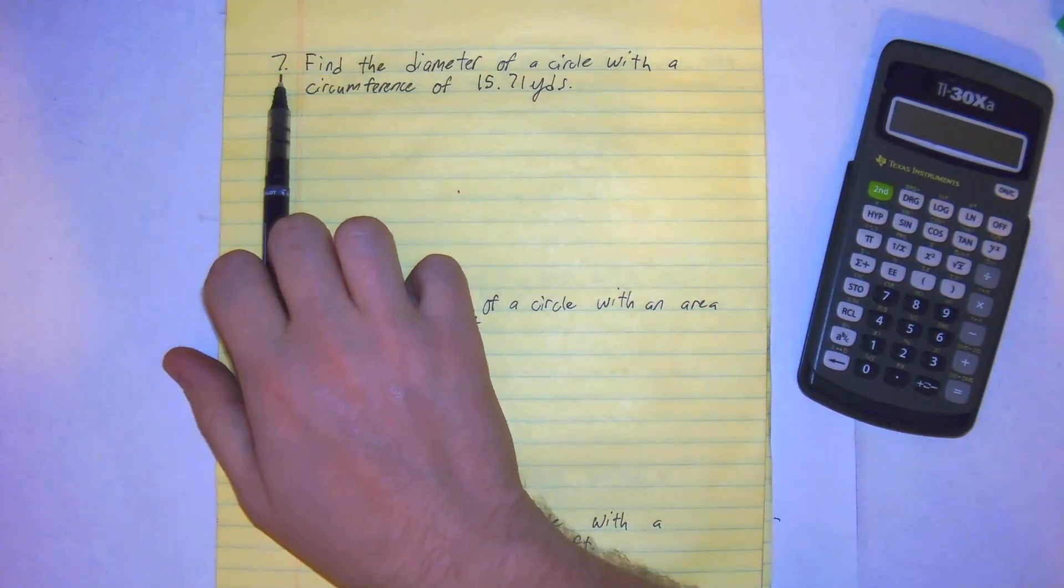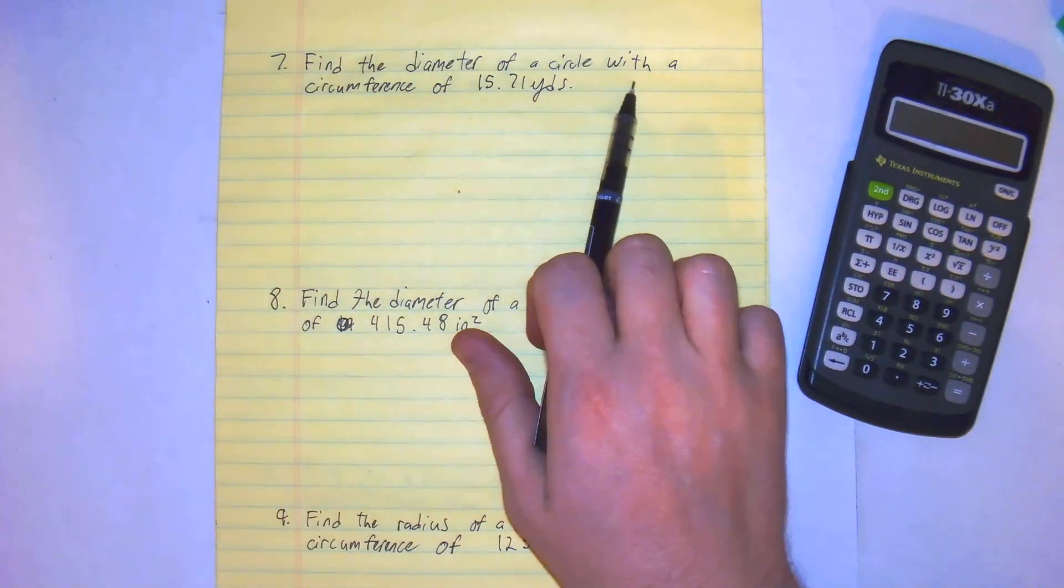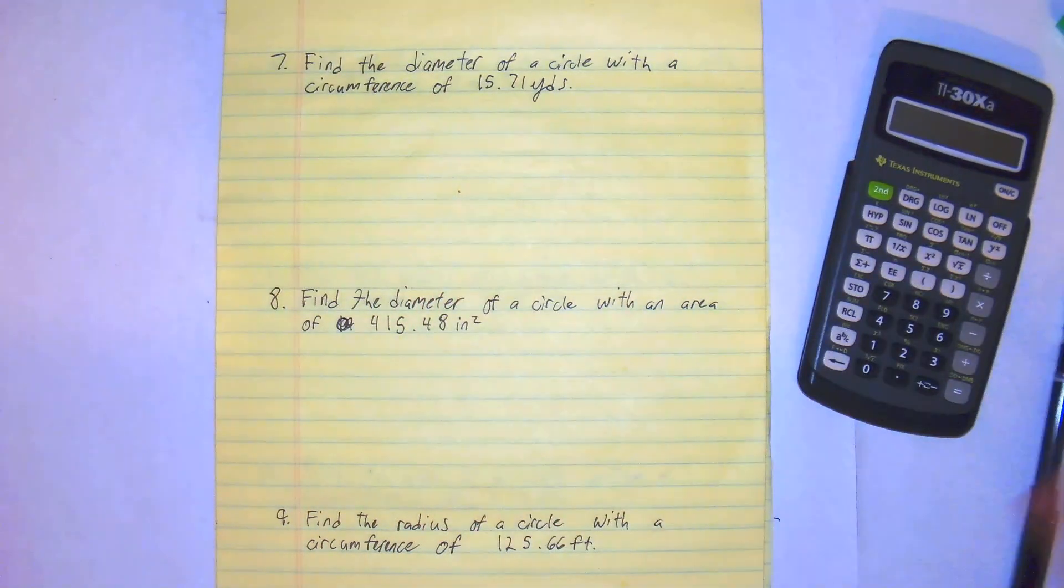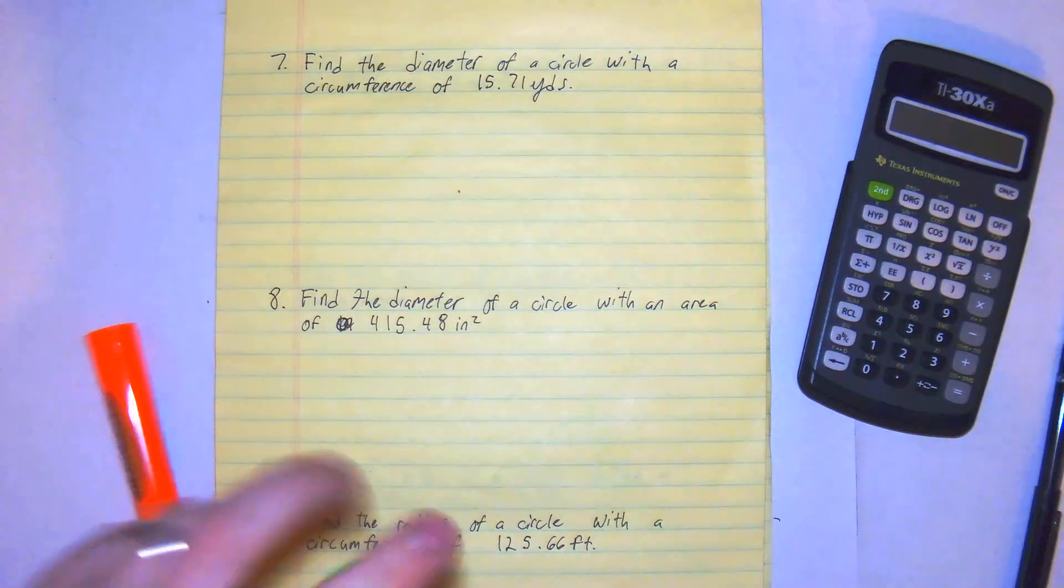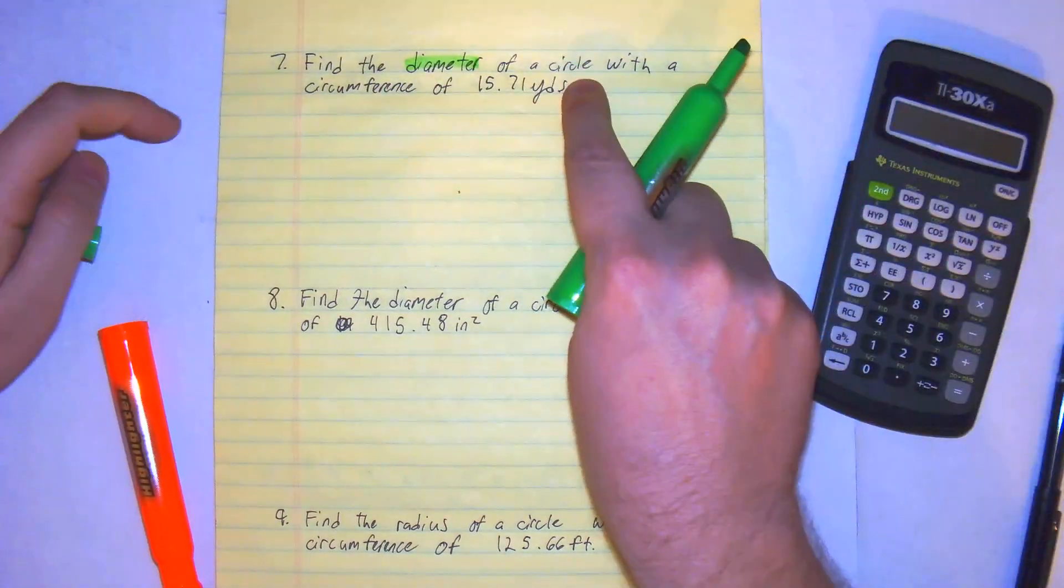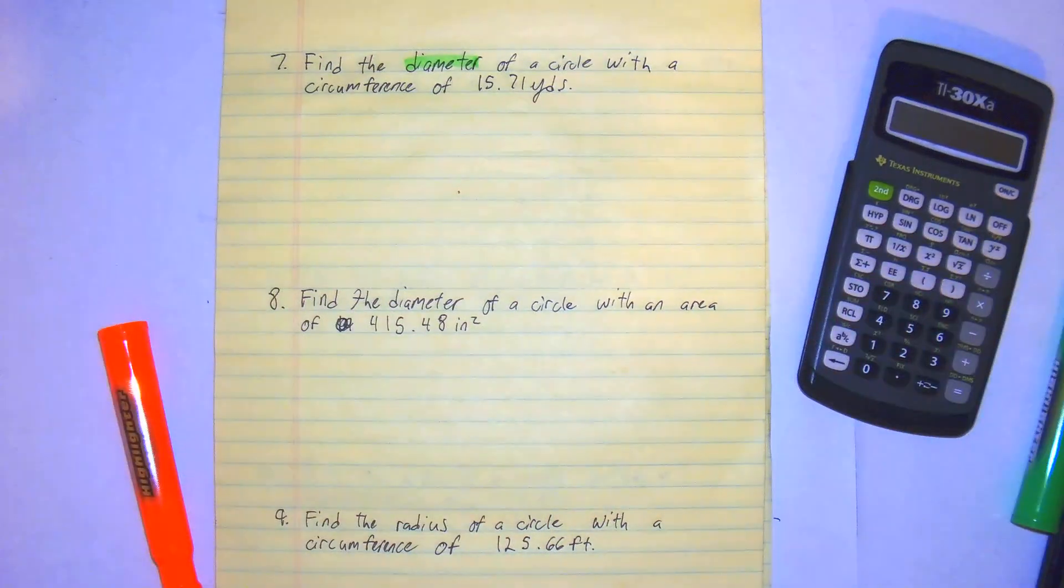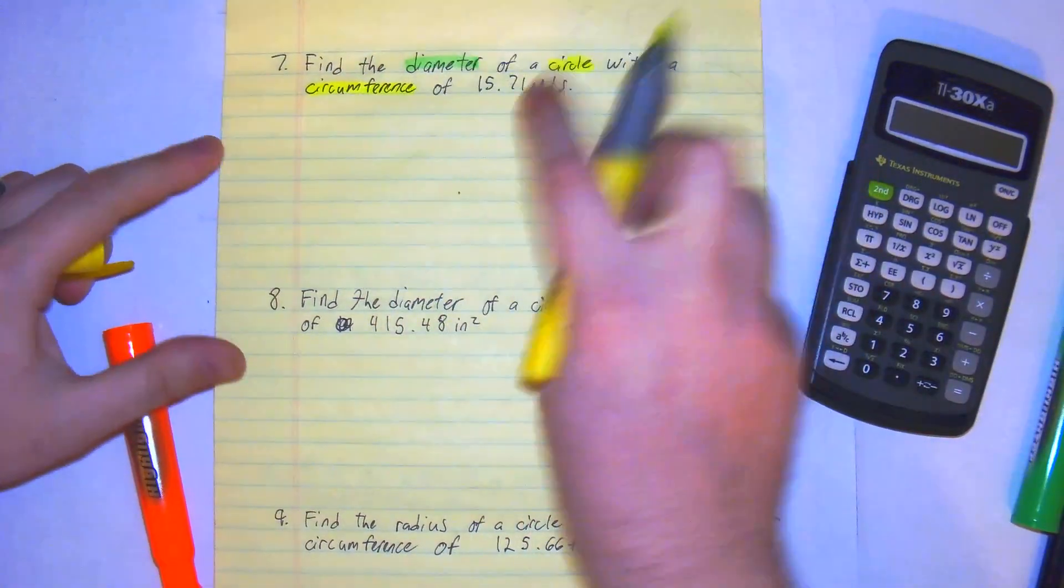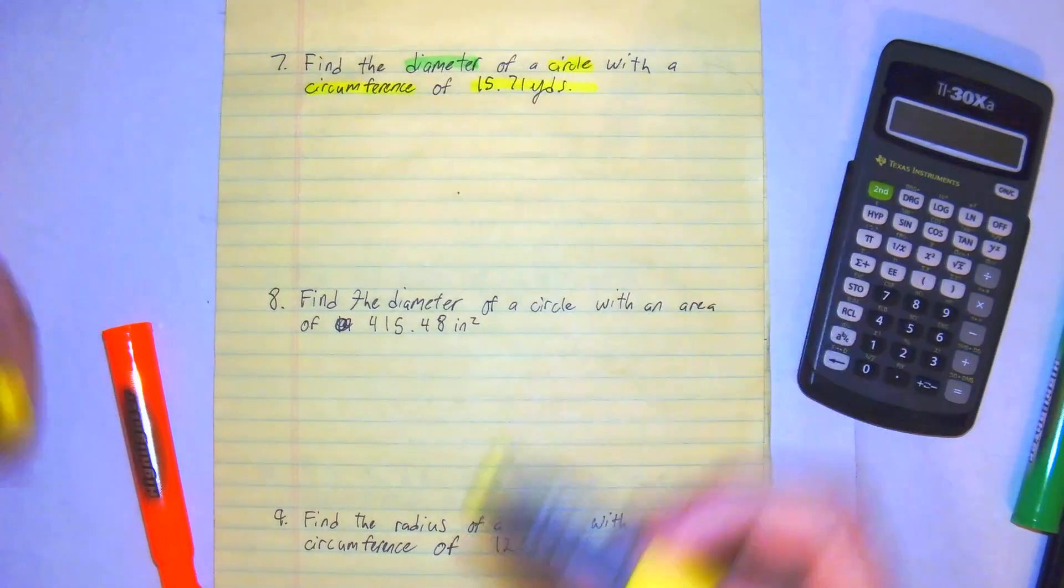Well, again, number 7. Number 7 says find the diameter of a circle with a circumference of 15.71 yards. So the goal of this problem is we want to find the diameter of a circle with a circumference of 15.71 yards.